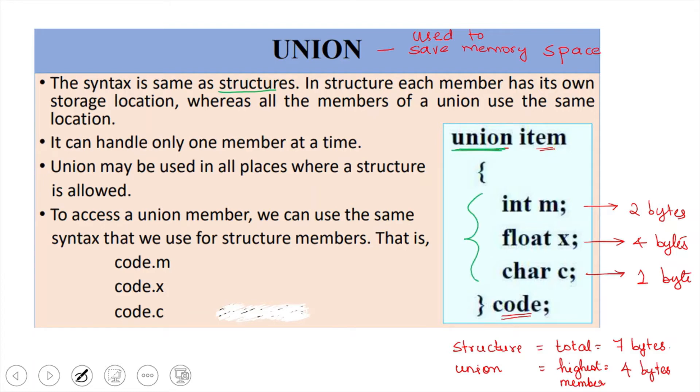We have a collection of different types of data, and the only difference is union is used to save the memory space. So, because of that, it can handle only one member at a time.